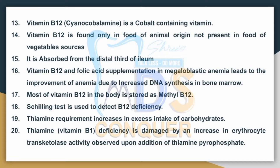The Schilling test is used to detect B12 deficiency. Thiamine requirement increases with excess intake of carbohydrates. Thiamine deficiency is assessed by an increase in erythrocyte transketolase activity observed upon addition of thiamine pyrophosphate.